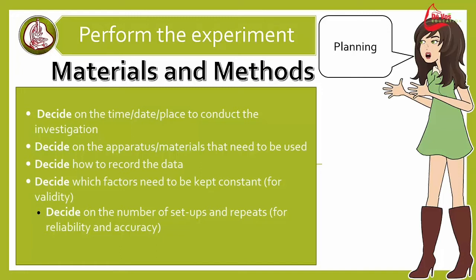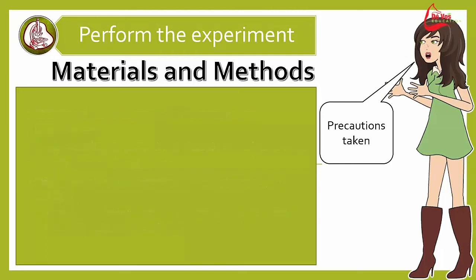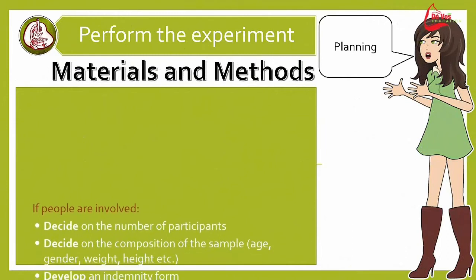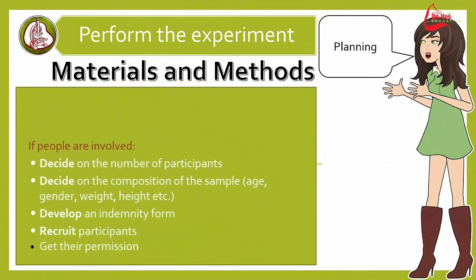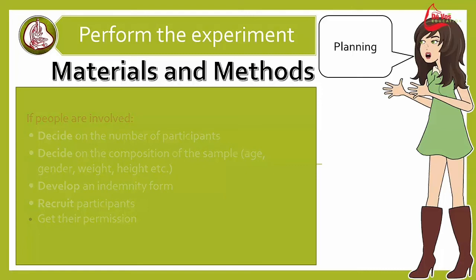Decide on the factors you need to keep constant to make it valid, the number of setups or repeats, and how you're going to calculate your average. If people are involved in the study, decide on the number of participants, the composition, their age, gender, weight, height, etc. Develop your indemnity forms, make your recruitment available, and get permission to perform your tasks.